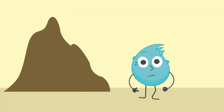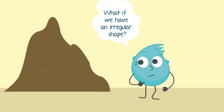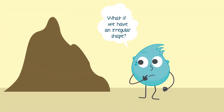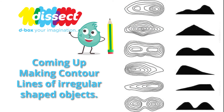But what if we have a regular shape like a mountain? How can we make a contour line map of a mountain? We would like to hear your ideas on the same. Hope you liked our video, which shows a simple way to understand the use of a contour line map. You can now try this method for various things and come up with your own contour line maps.